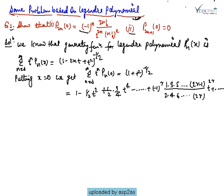We know that the generating function for the Legendre polynomial P_n(x) is: summation from N=0 to infinity of T^n * P_n(x) equals (1 - 2xT + T²)^(-1/2). We have already proved this.